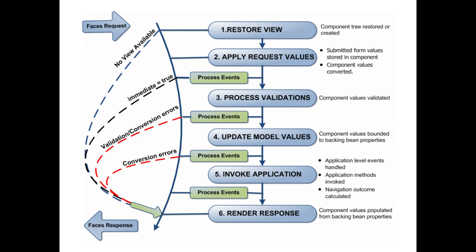Looking at another diagram describing the same thing in slightly different words: a request comes in to a Faces application. The first step is restoring the view, then submitting the form values, converting component values, validating them. Assuming validation passes, the values are bound to the backing bean properties. Then application-level events get handled, methods are invoked, and the navigation outcome — where the view comes from next — happens here. Then the response is rendered, picking up values from the backing bean properties in the model.